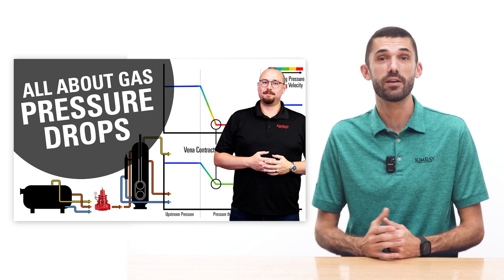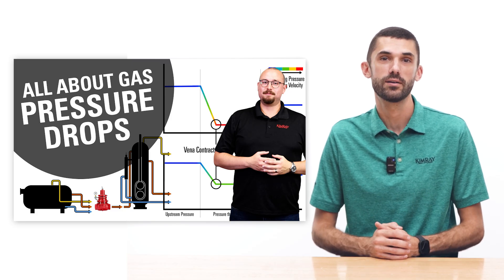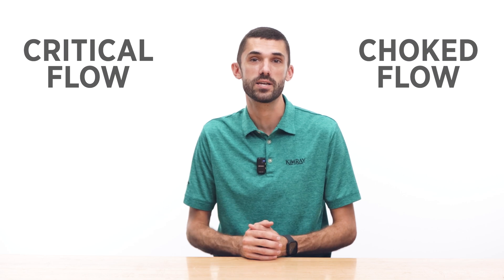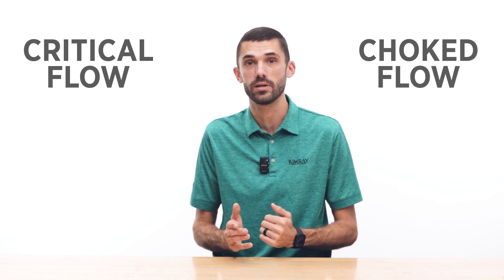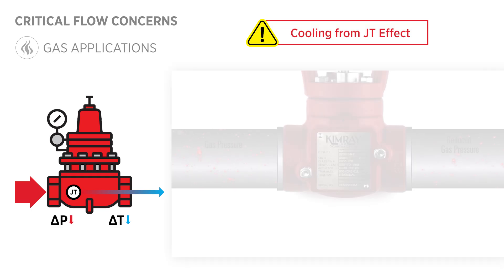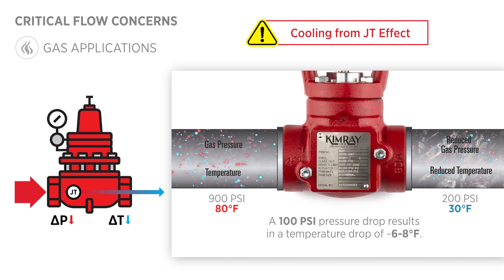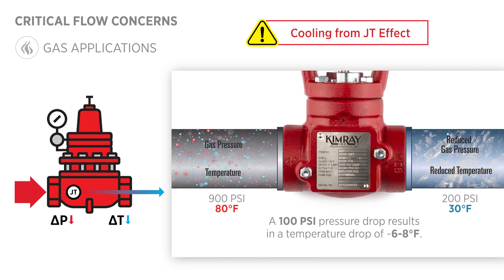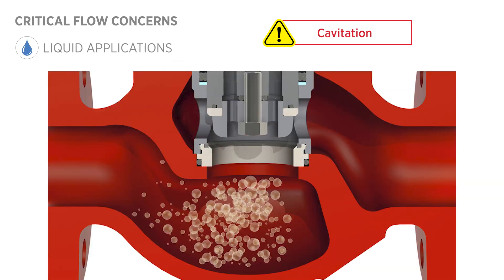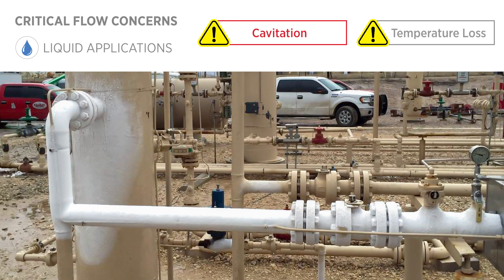For more on cavitation and flashing, check out our blog. While not technically identical, in valve sizing the terms are used interchangeably and both have concerns to be aware of. In gas applications, the main concern is cooling from the Joule-Thompson effect — for example, a 100 psi drop causes about 6 to 8 degrees Fahrenheit of temperature drop. In liquid applications, the main concern is cavitation, which can damage the valve internals and increase the chances of water hammer. Temperature loss is also a concern with liquids because they could freeze and block flow.